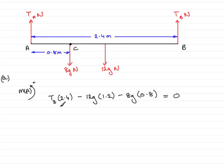So, if we work this out, we've got 2.4 TB here. 2.4 TB. And, if you do on a calculator, minus 12G times 1.2 and minus 8G times 0.8, you'll find that you get minus 203.84. And that will equal zero. So, what we need to do now is just add 203.84 to both sides and then divide by 2.4 to give TB equals 203.84 divided by 2.4.